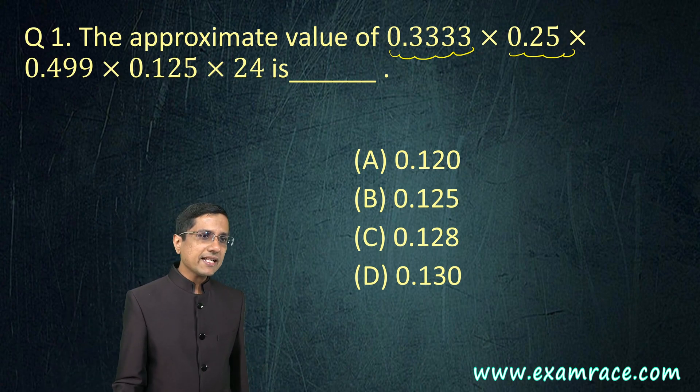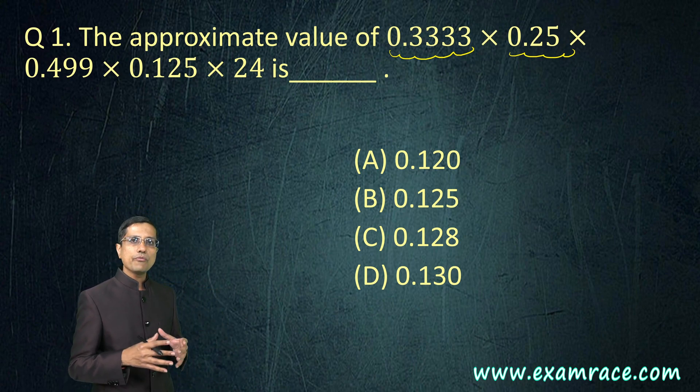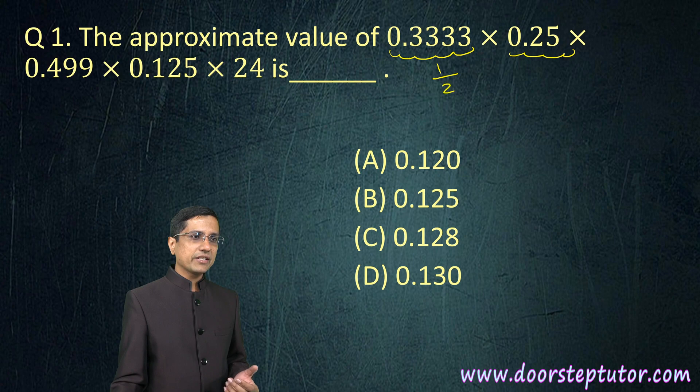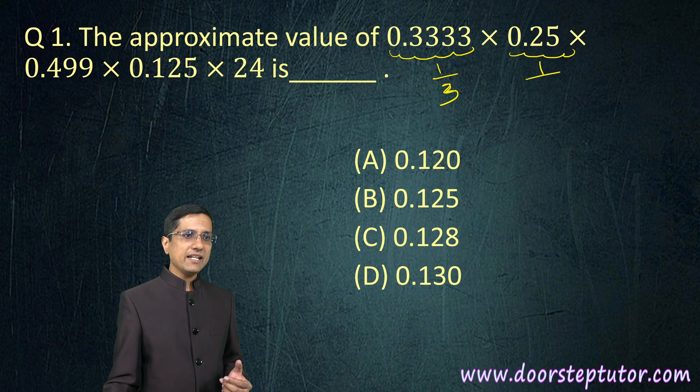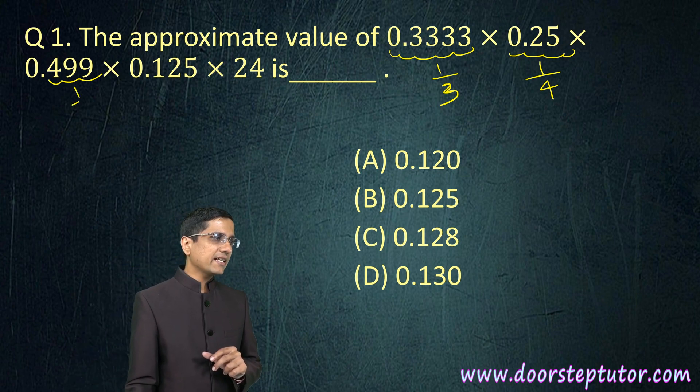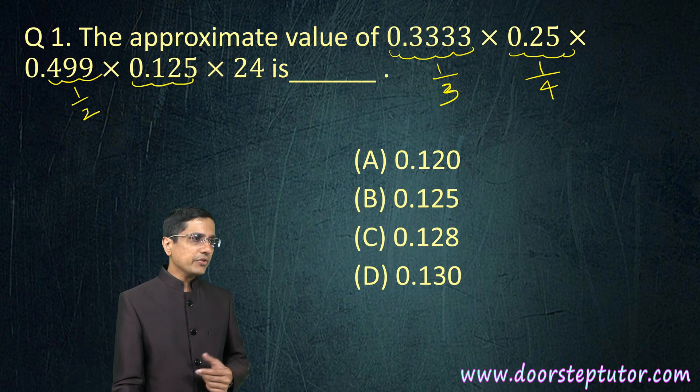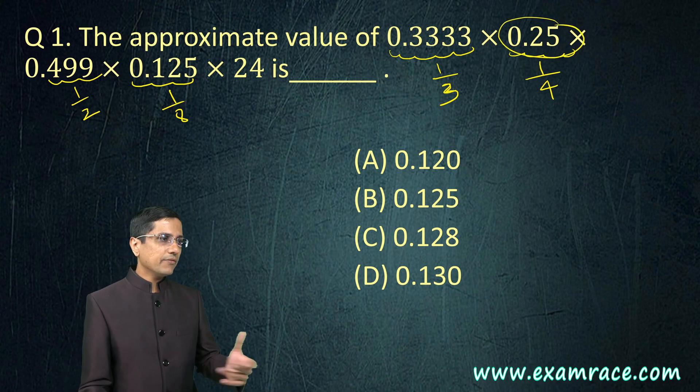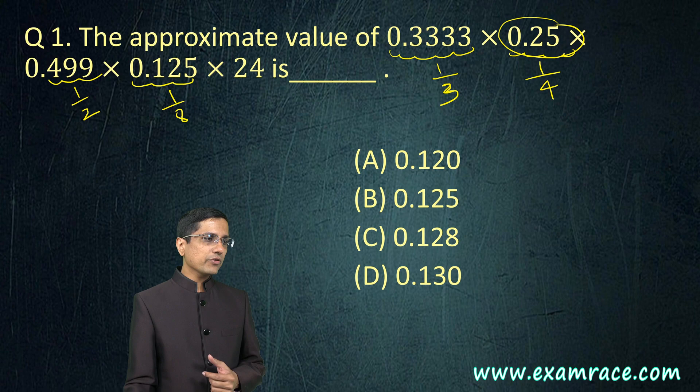What I have chosen is I would convert each of these decimals into fractions. So 0.33 becomes 1 by 3, 0.25 is really 1 by 4, 0.499 we will approximate to 0.5 so half, 0.125 becomes 1 by 8. You should just know this - think about it this way: 0.25 is 1 fourth, half of 0.25 is 0.125 and therefore it is 1 by 8, and then 24 remains 24.